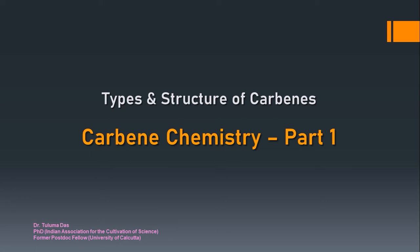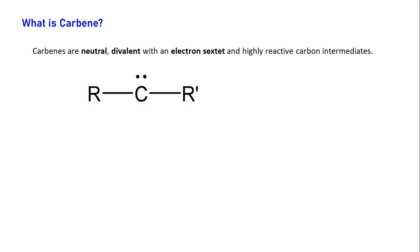Carbon chemistry — I will discuss this in different parts, and part 1 will be types and structure of carbenes. This is one of the important reactive intermediates of carbon. In this video we will see what the different types possible are, and also the detailed structure of carbenes. So what is a carbene?